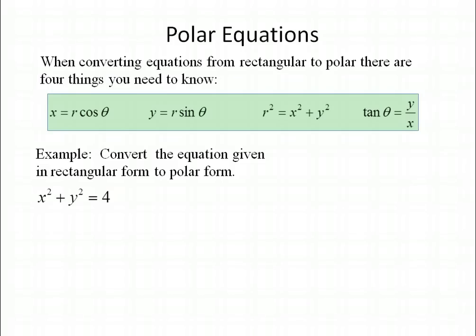When converting these equations you need to keep in mind four things: x equals r cosine theta, y equals r times sine theta, r squared equals x squared plus y squared, and the tangent of theta equals y over x. We can use any of those four to help us convert the equations.